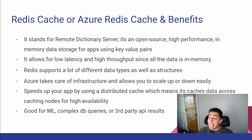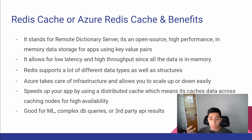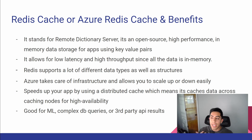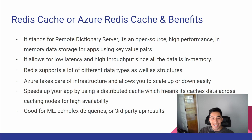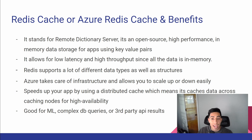It allows for low latency and high throughput since all the data is in memory, alleviating stress from the database. Instead of going to the database to retrieve a massive query, you can just go to your cache and grab it from there because you already know it's a highly requested thing. Redis also supports a lot of different data types and structures — it's basically a NoSQL database. Azure takes care of infrastructure, lets you scale up or down easily, and speeds up your app using a distributed cache across caching nodes for high availability, so if a server goes down, others pick up the slack. It's also great for machine learning, complex database queries, or third-party API results.